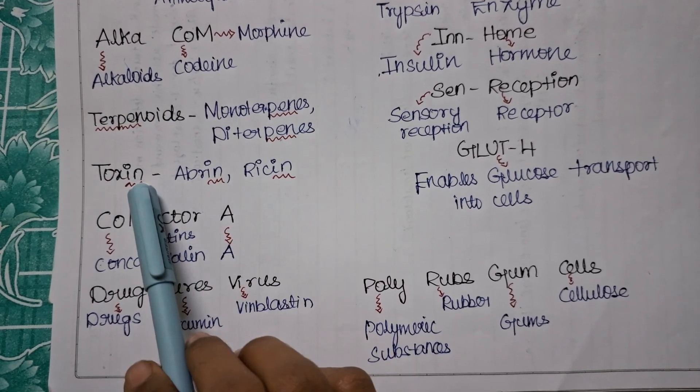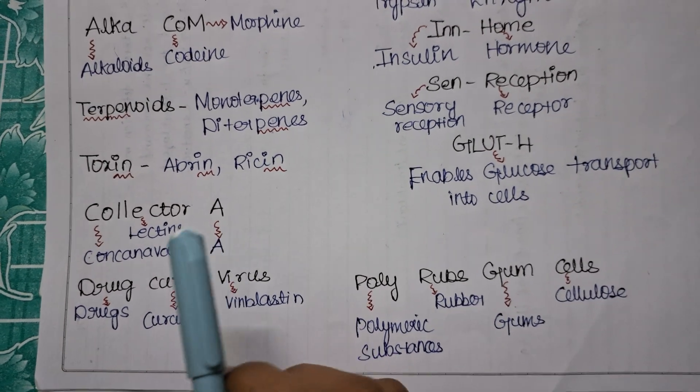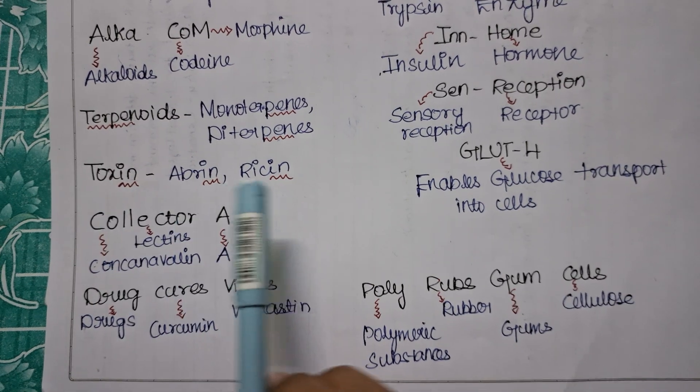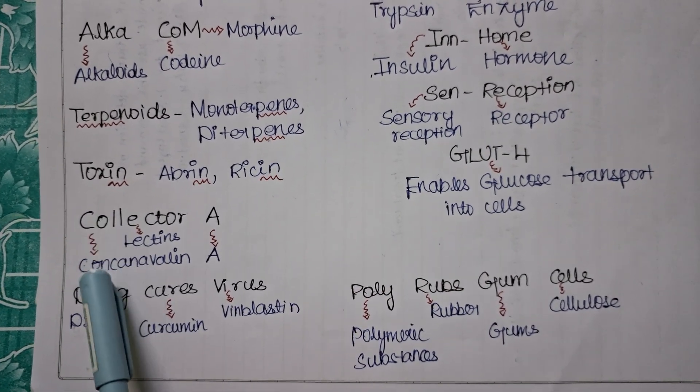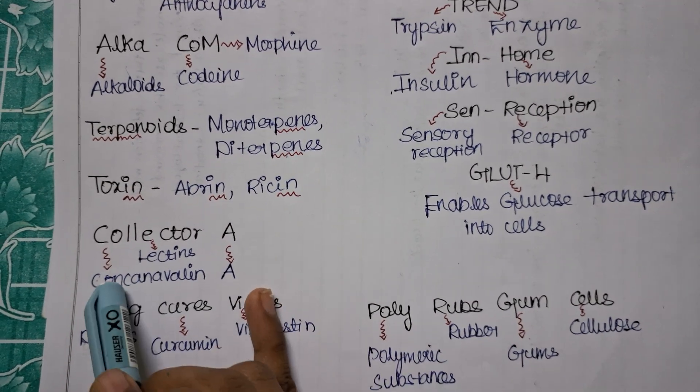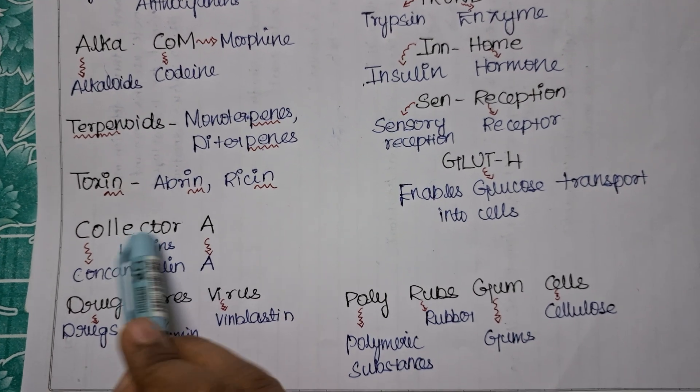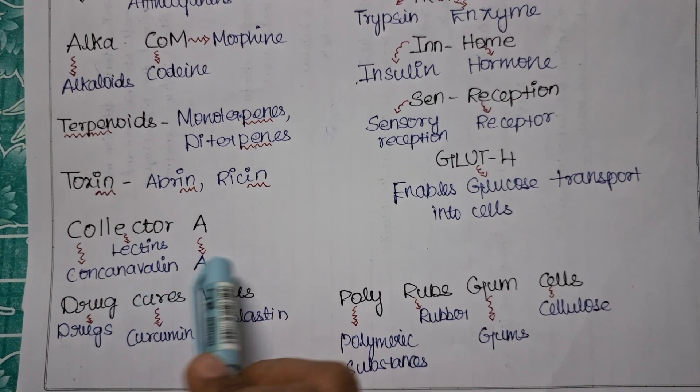Toxin - abrin and ricin. It is also having I-N. It is having PEN for terpenoids. In case for toxin it is having I-N. Now the next one will be for your lectins. The trick is very simple: COLLECTOR A. There is a collector called A. So COLLECT means corn.